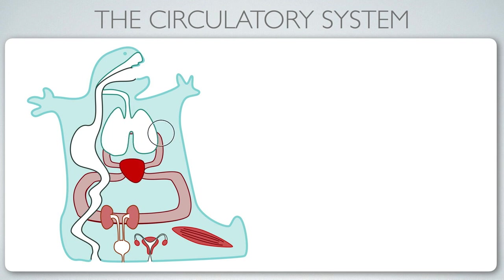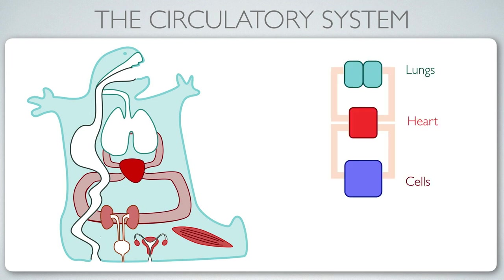The blood returns to the heart, which is partitioned into left and right sides. Blood entering the right side does not flow to the left side until it has passed through the lungs and returned to the heart. It then leaves the left heart and flows to the rest of the body. Blood becomes oxygenated in the lungs, travels to the cells through the heart, and returns deoxygenated to the right heart. The question is: how does the heart pump?